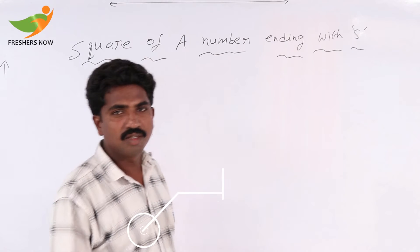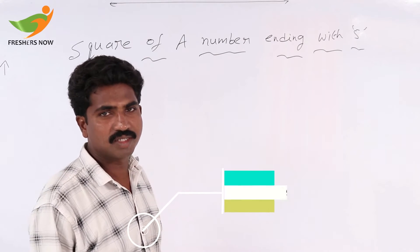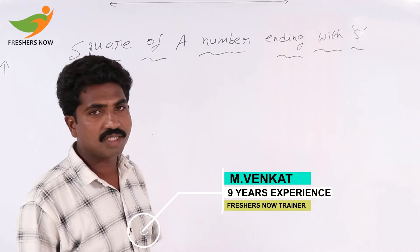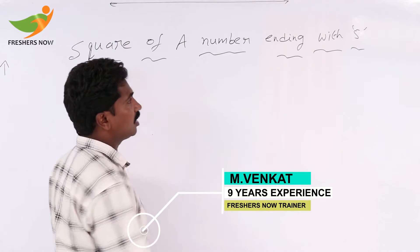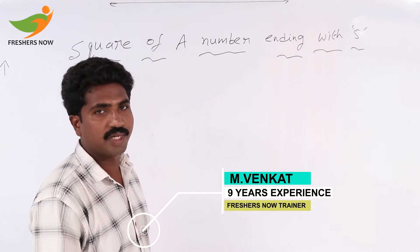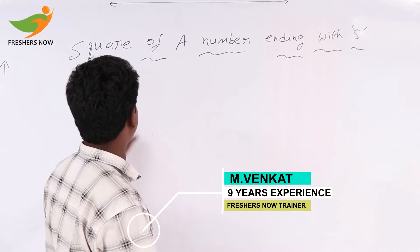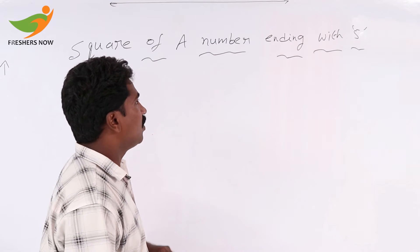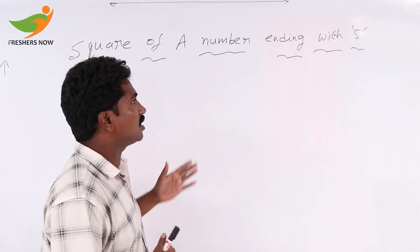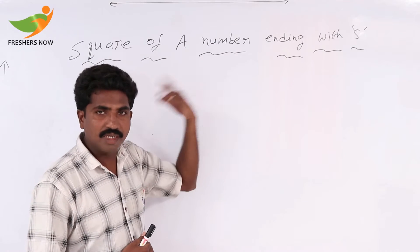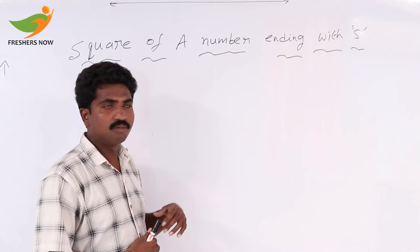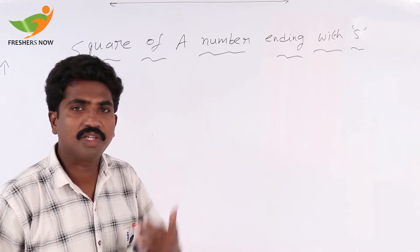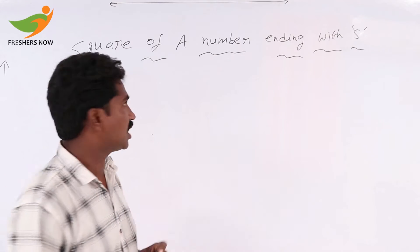Hi friends, my name is Valkat. Today we discuss square of a number ending with 5. We can solve square of a number ending with 5 easily by using our technique. We can solve it within 4 or 5 seconds.